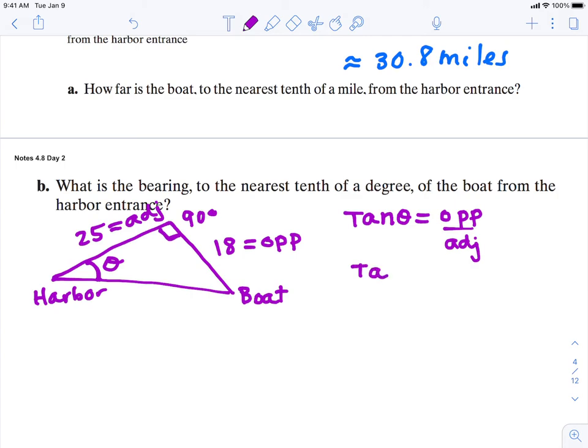So now I'll substitute in what we know. Side opposite is 18 miles. Side adjacent is 25 miles.